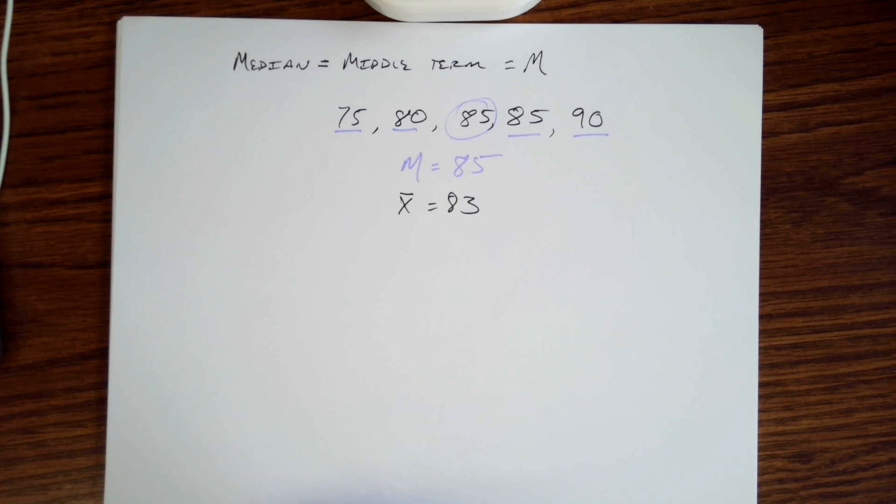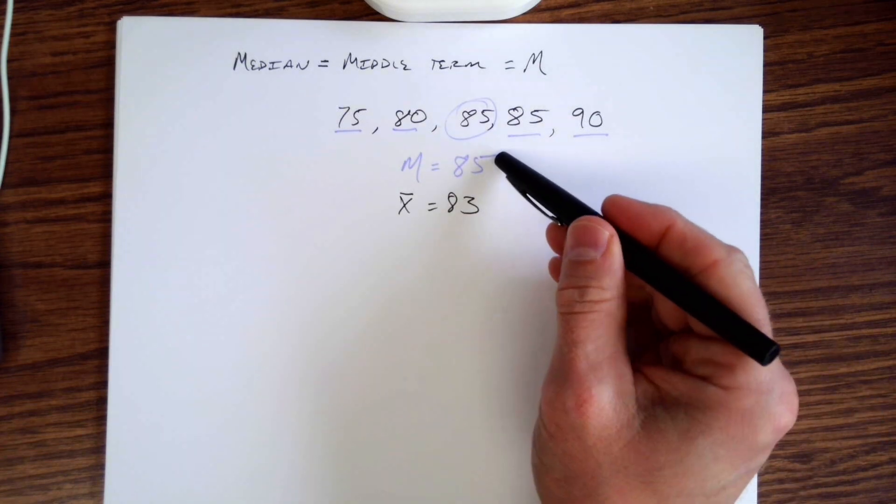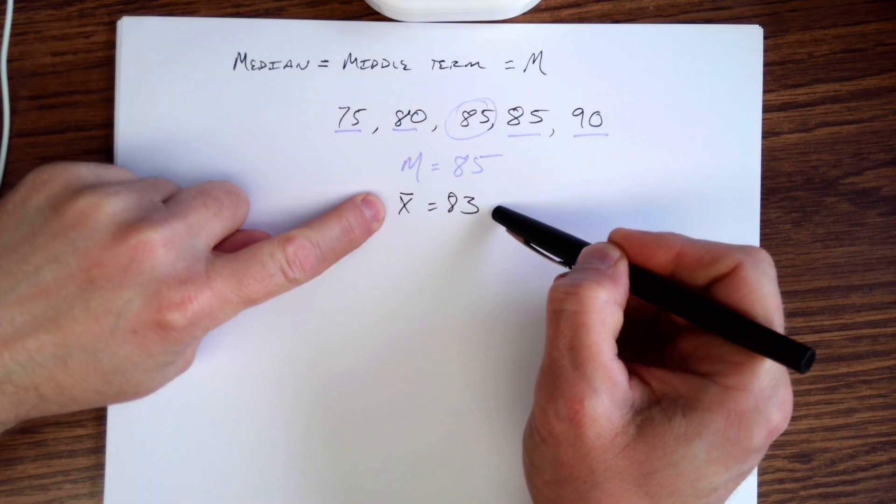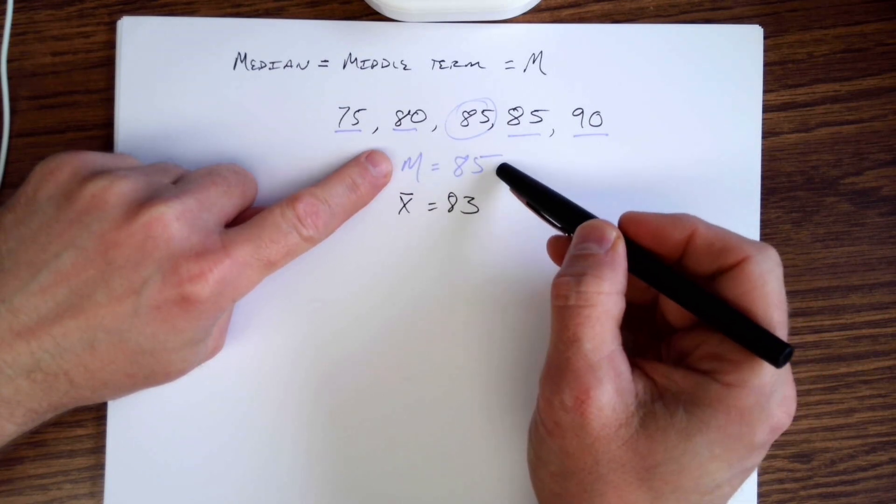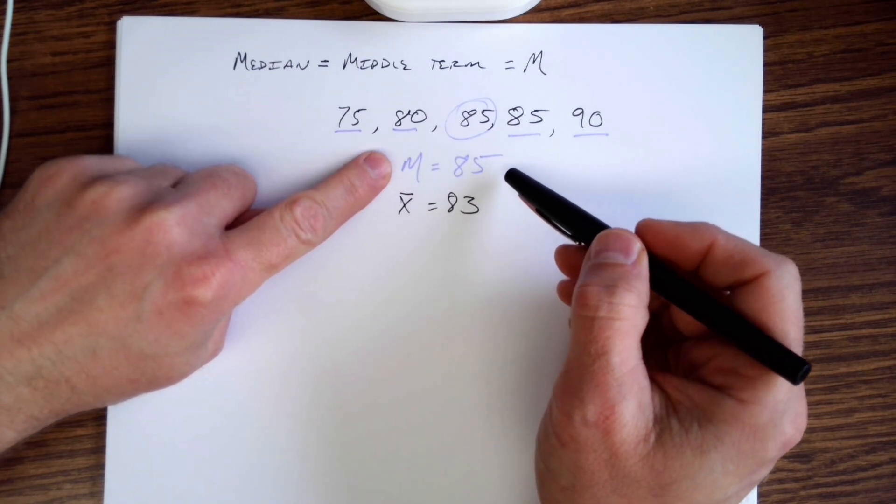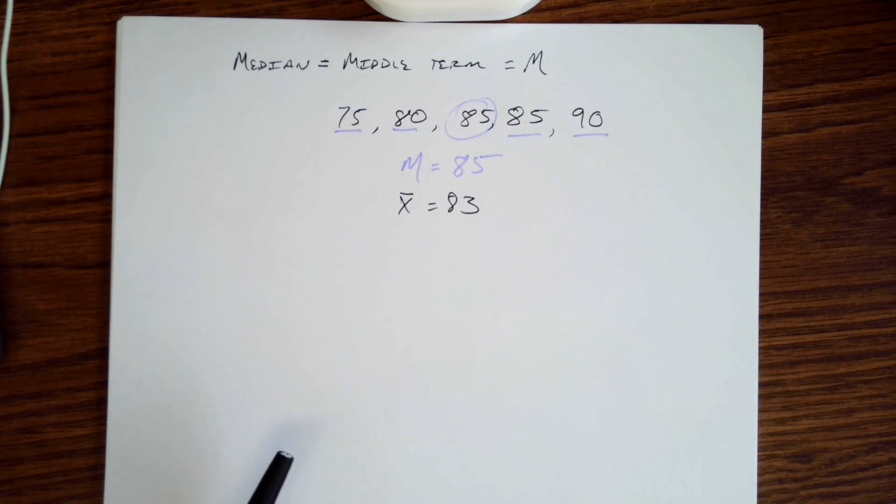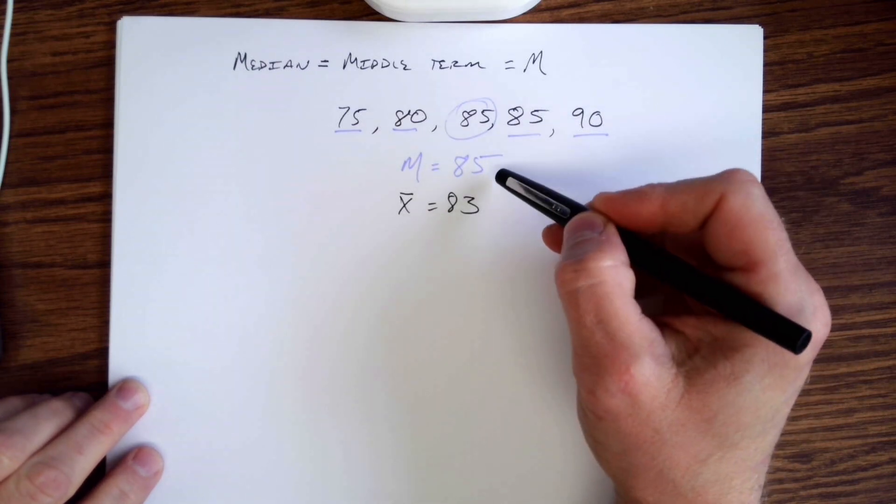We have a median of 85, we have an X bar value of 83. So we have two different data points, two pieces of data that we've found out of our data set. Keep in mind what I'm saying there: we've found two pieces of data. We've created this average here, and we've found this other piece, the median, which tells us some other little bits of information.